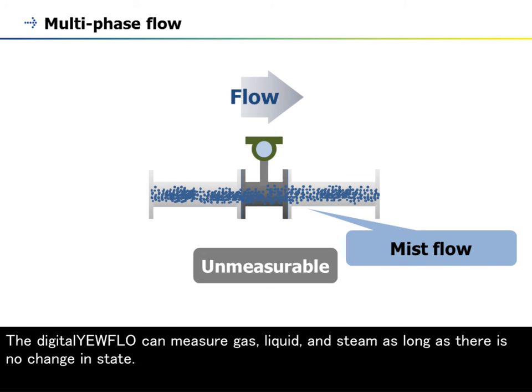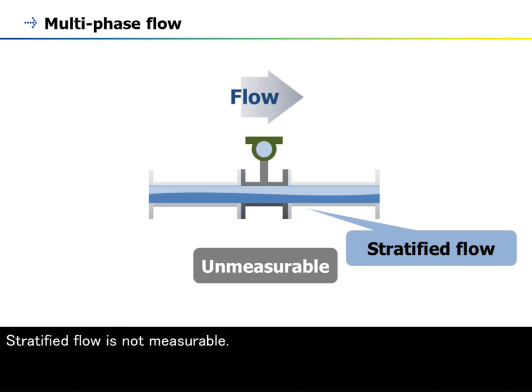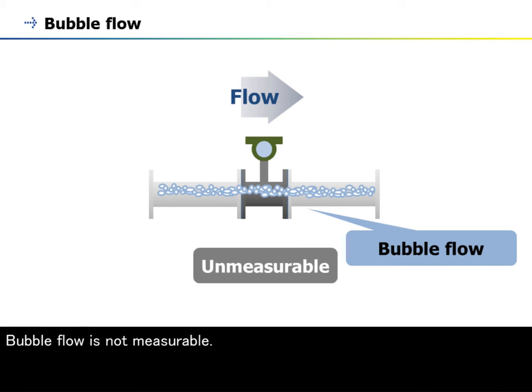The digital yearflow can measure gas, liquid, and steam as long as there is no change in state. However, accurate measurement of mixed flows, such as gas and liquid, is not possible. Mist flow is not measurable. Stratified flow is not measurable. Bubble flow is not measurable.